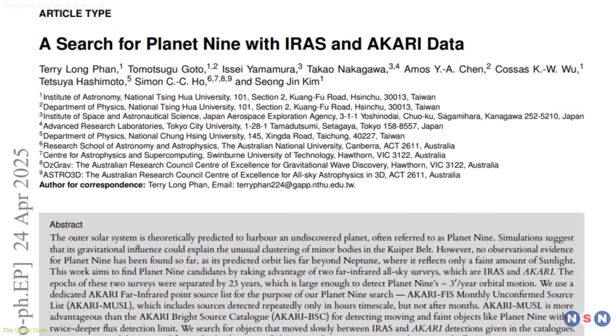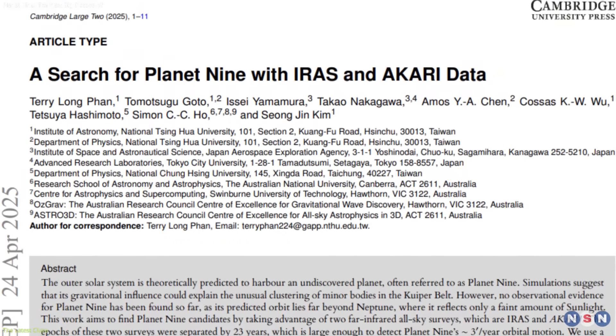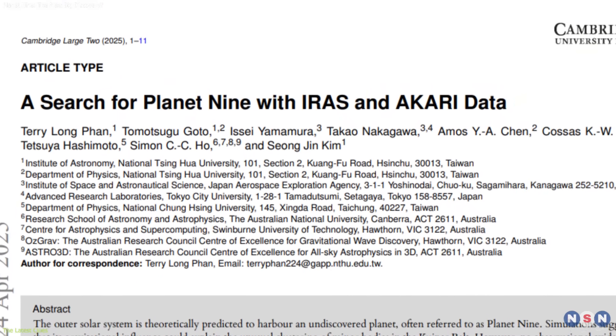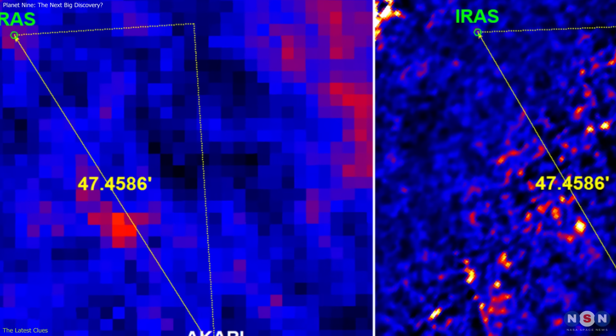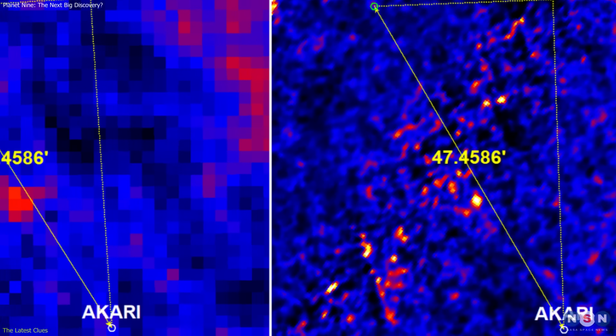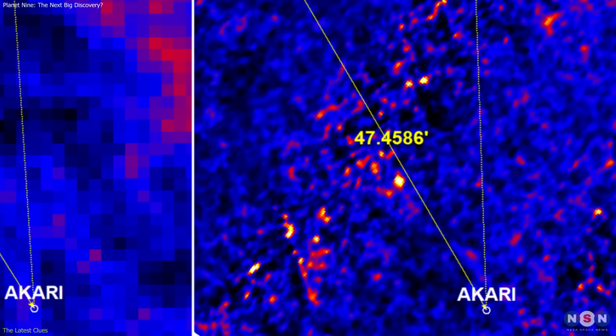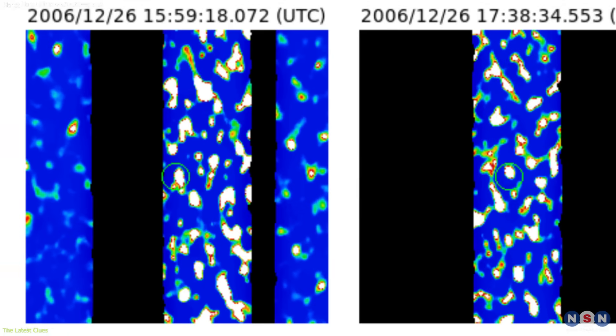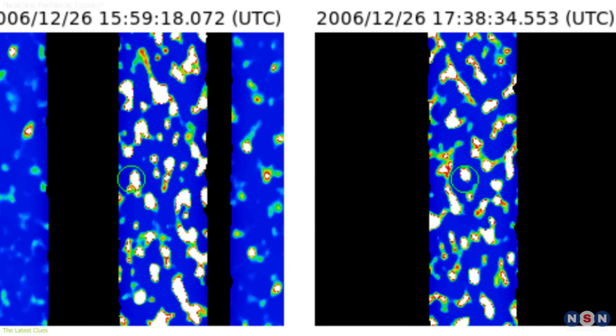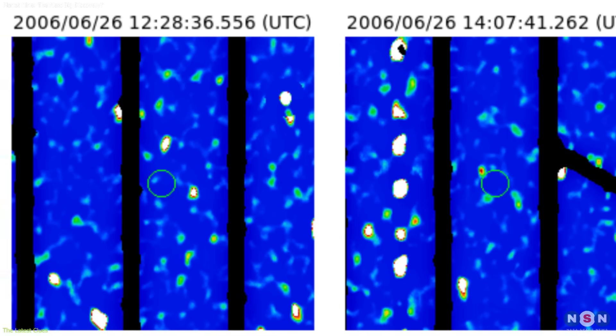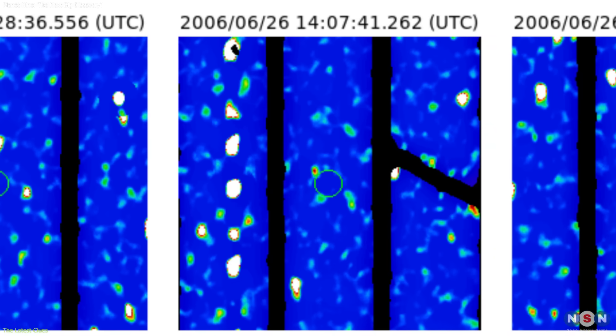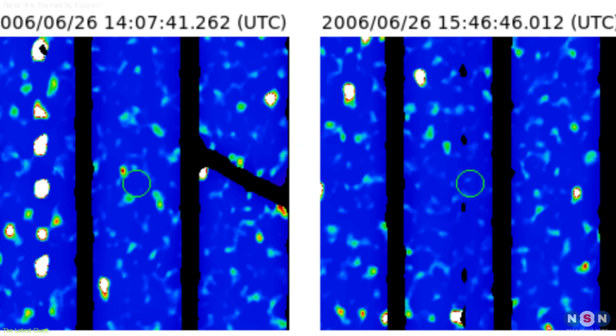Another promising lead came from reexamining infrared surveys taken decades apart. A faint moving object was spotted in both IRIS 1983 and Akari 2006-2011 data. Some suggested it could be it. But there was a problem. Its orbital tilt seemed far steeper than expected. While intriguing, the mismatch meant it could not be identified with confidence.